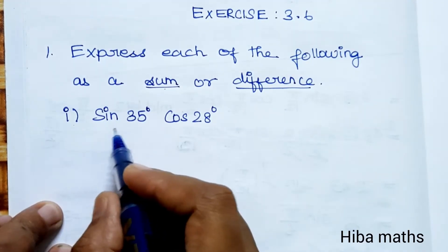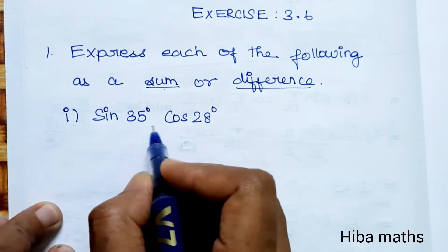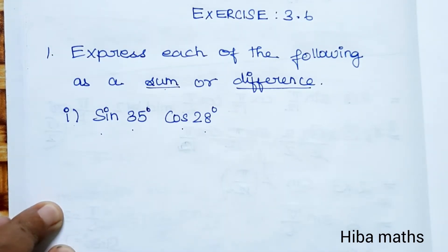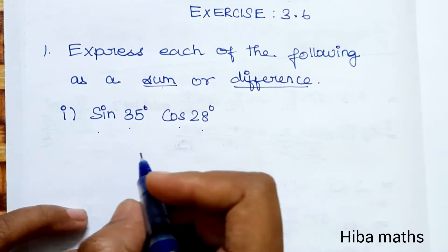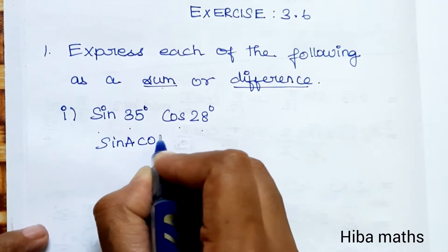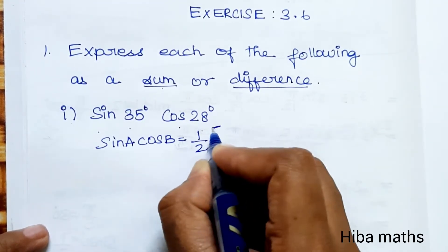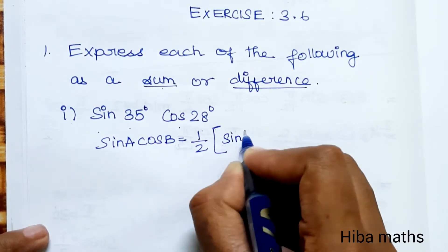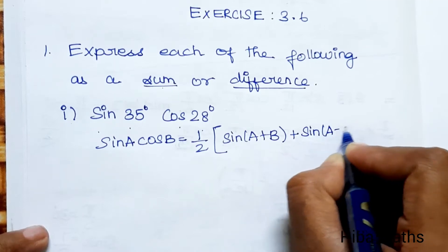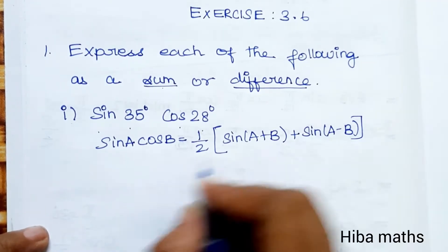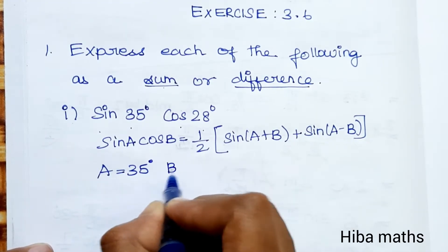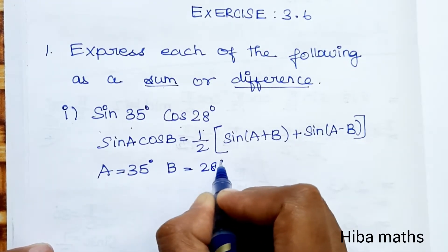First question: sin 35° cos 28°. We use the sin A cos B formula. Substituting, A is 35° and B is 28°. Sin A cos B = 1/2 [sin(A+B) + sin(A−B)].